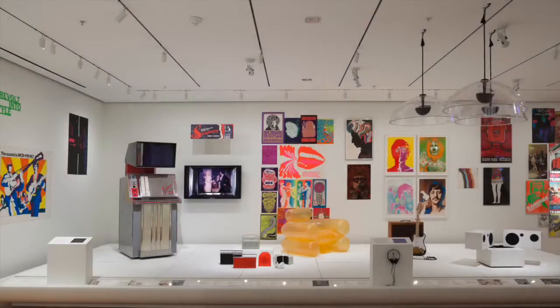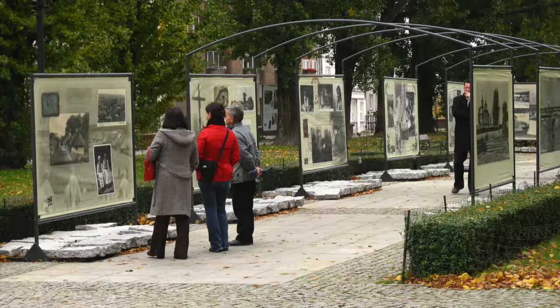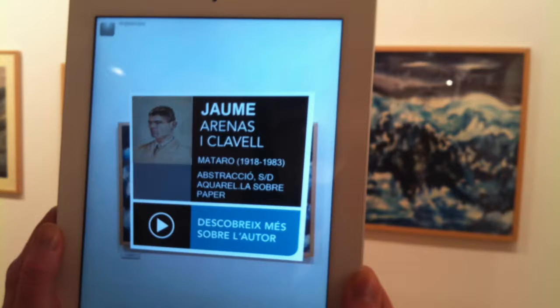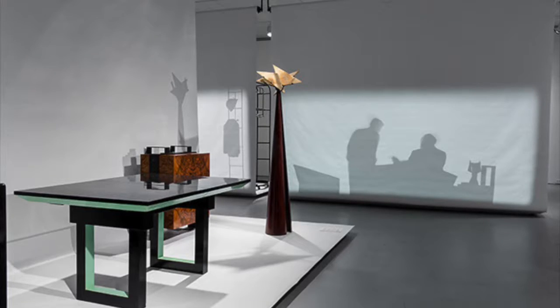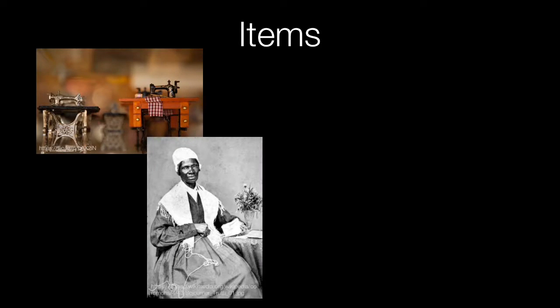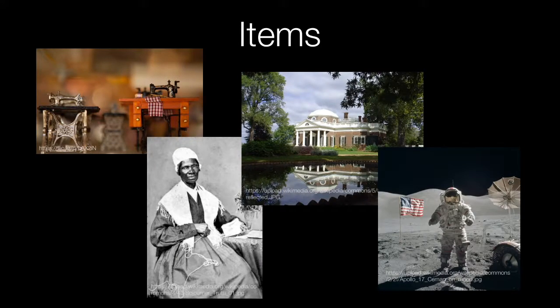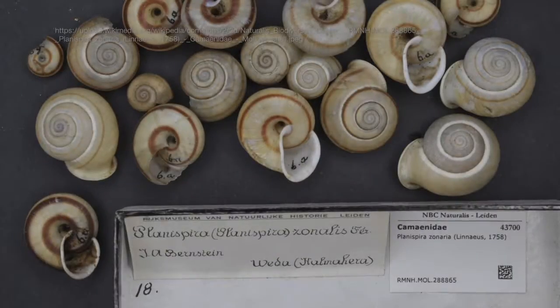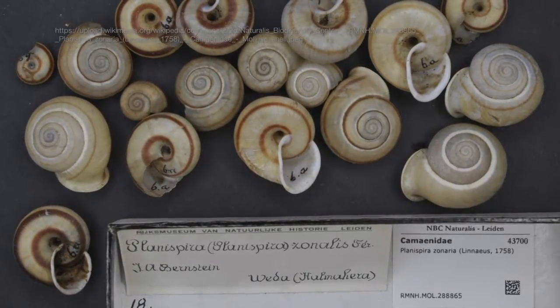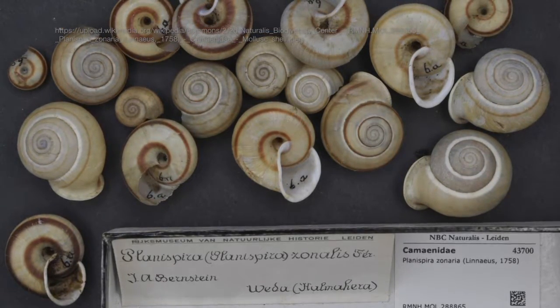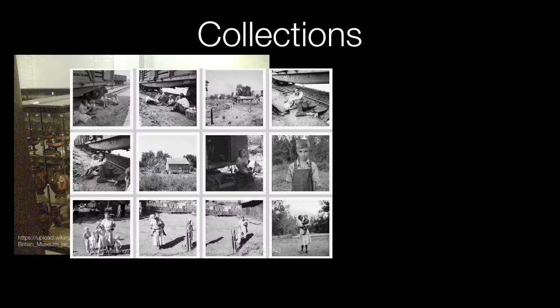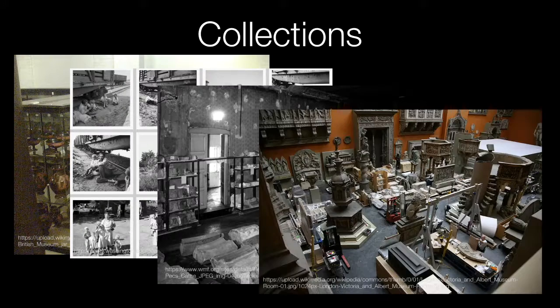Then, curators create exhibits that use items drawn from one or more collections to communicate a specific narrative to the general public. Omeka works in a similar way. Items are individual objects, people, places, or events. Items can be gathered together into collections. Collections are groups of items stored together because they share a common feature, such as a type of object, creator, provenance, physical location, or other type of information.